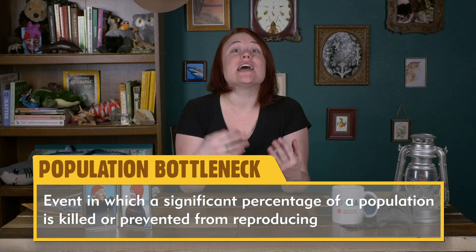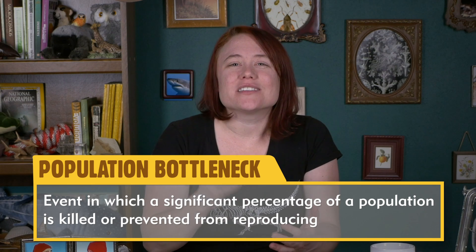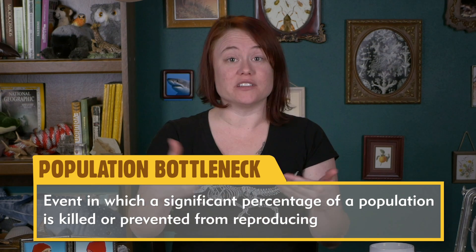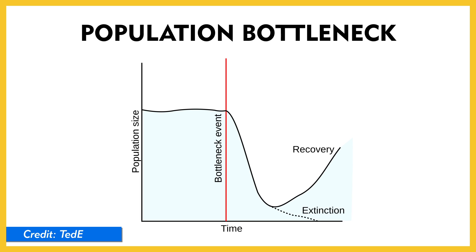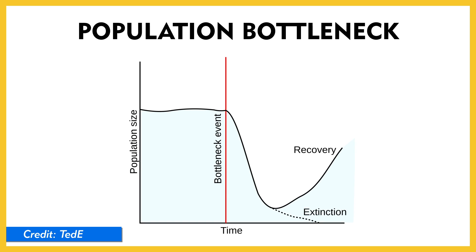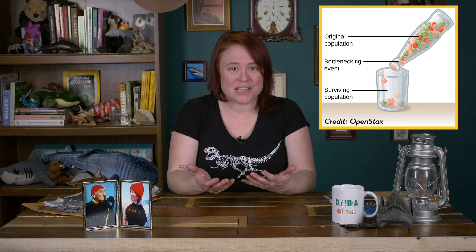Another concept to consider within the realm of extinction is the idea of a population or genetic bottleneck. This is when you have a significant percentage of a population killed or prevented from reproducing — some definitions say when a population is reduced by 50% or more. With genetic bottlenecks, you can have increases in inbreeding due to a reduced pool of possible mates. If there are traits that wind up being harmful to an individual and then to the population, this can lead to an increased chance of extinction.